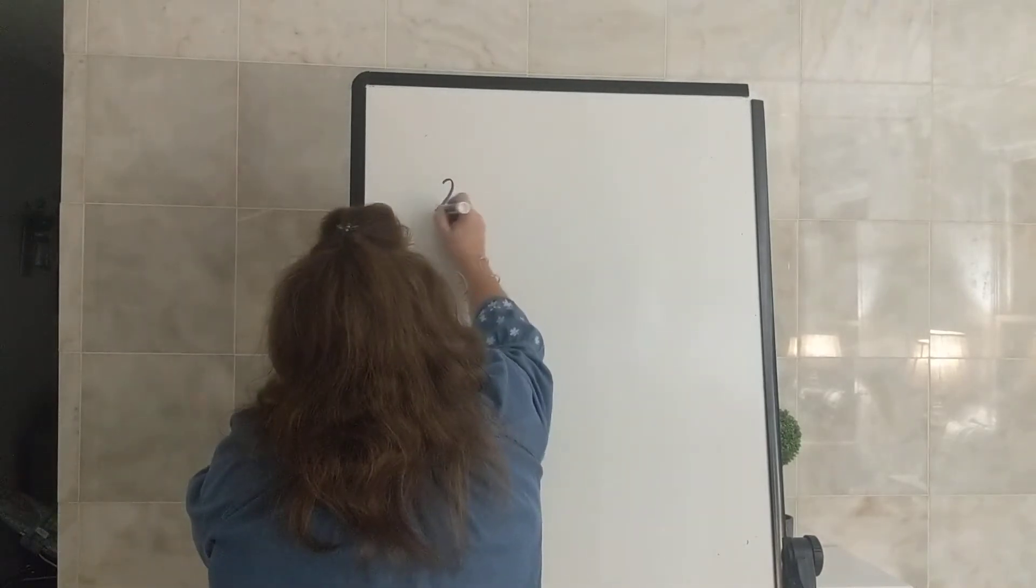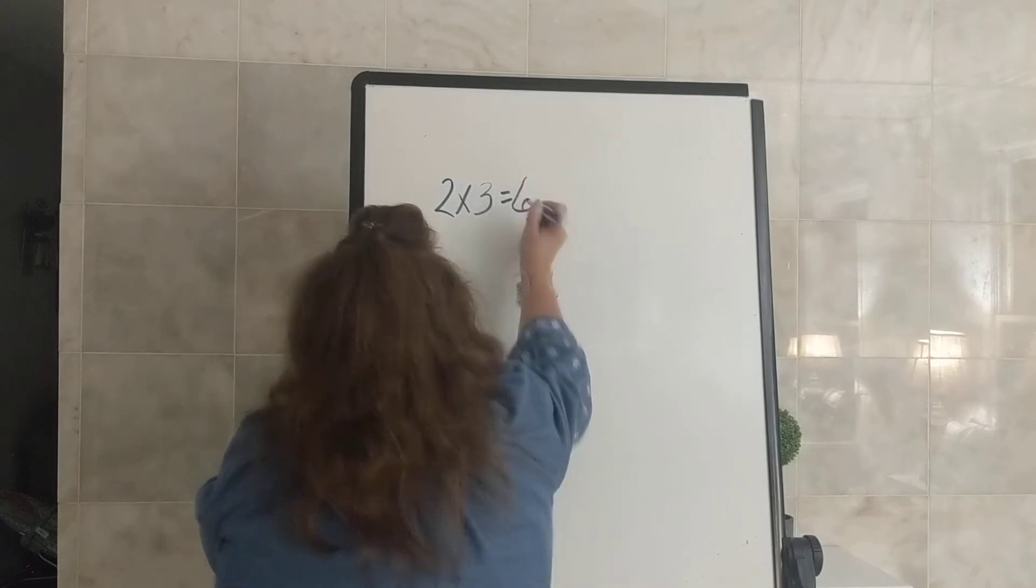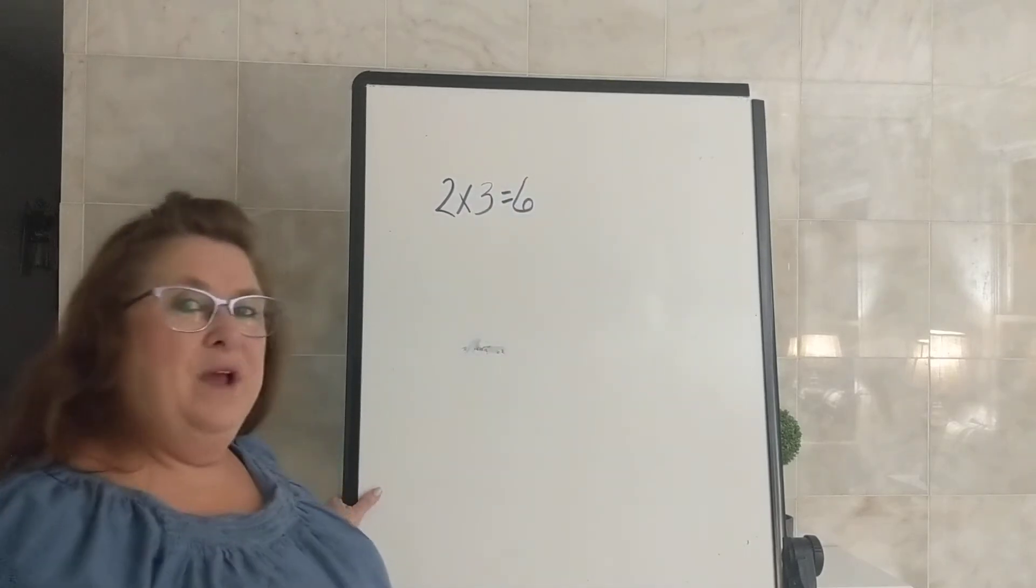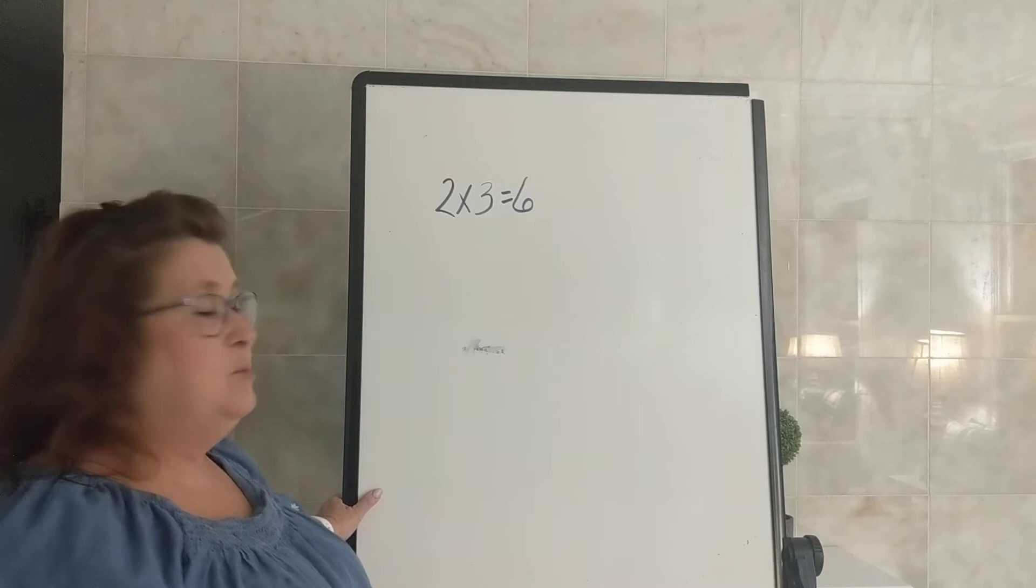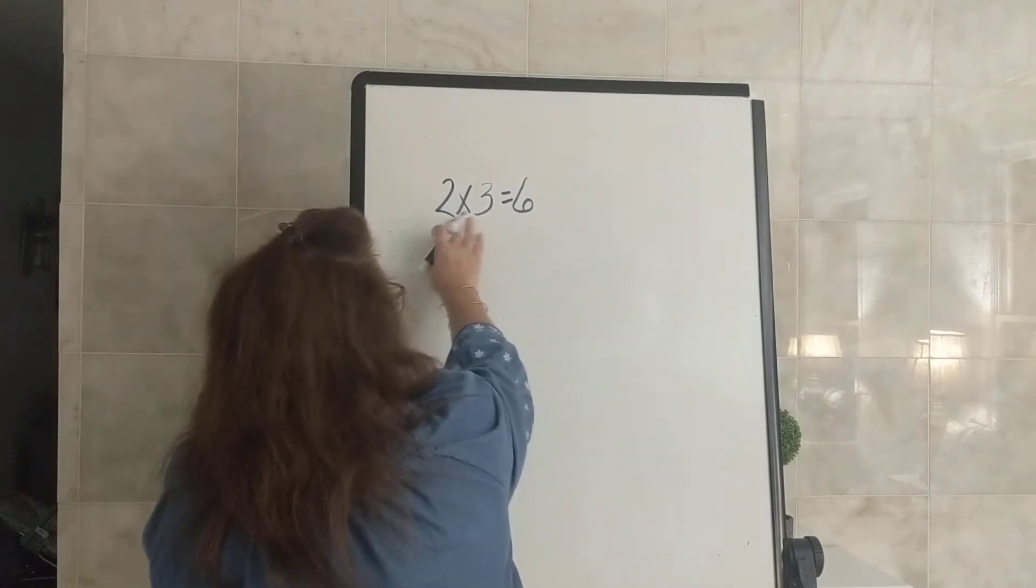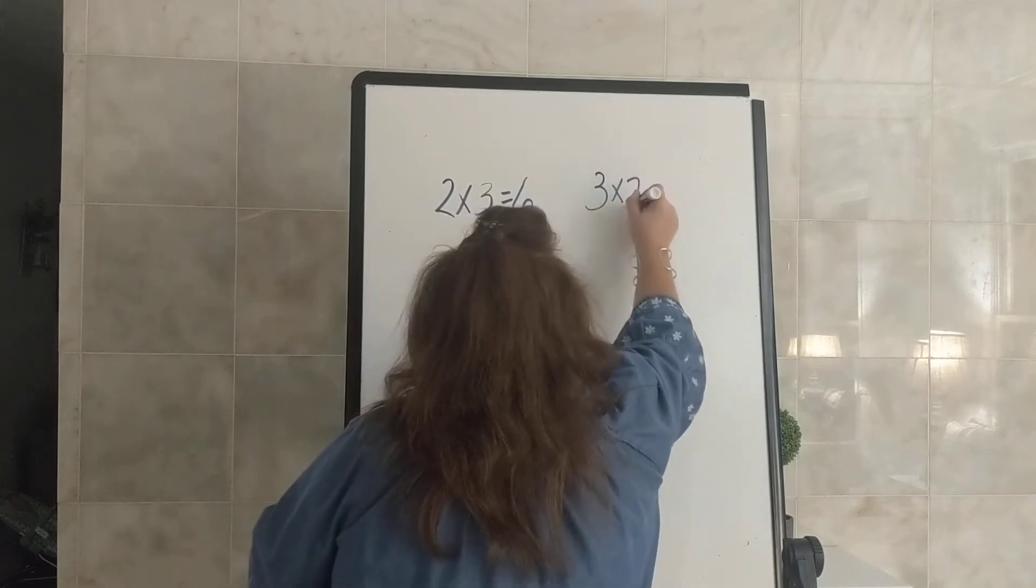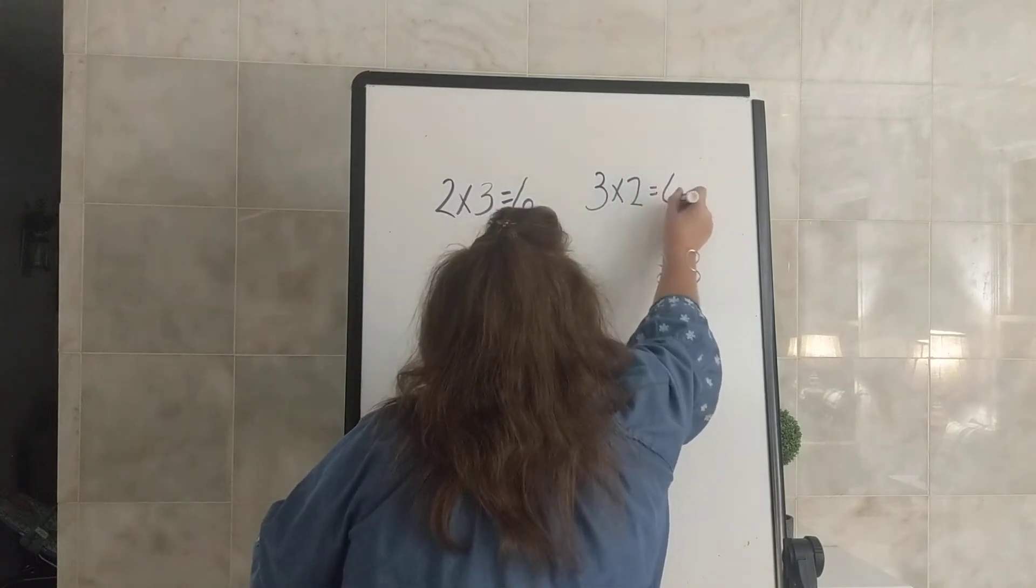So if we have the multiplication fact 2 times 3 equals 6, that is one way that we illustrate or show that multiplication fact. We can also say, remember our factors can change order, we can say 3 times 2 equals 6.